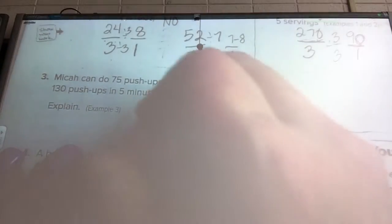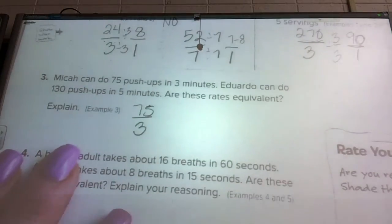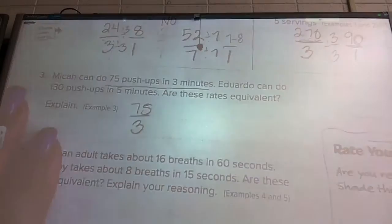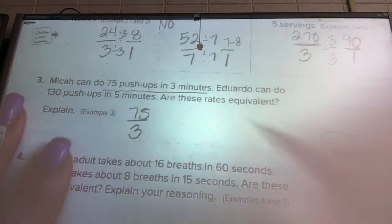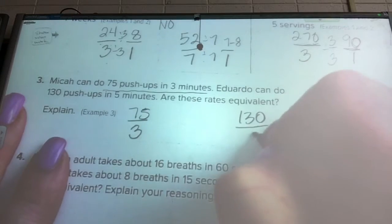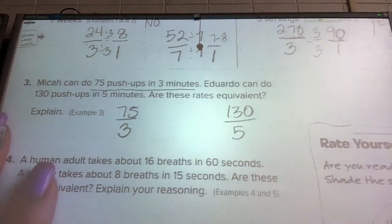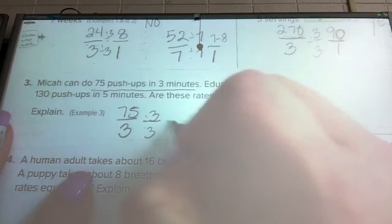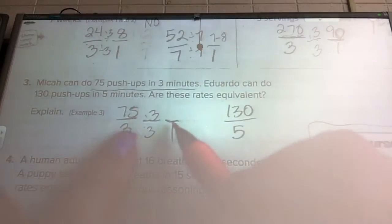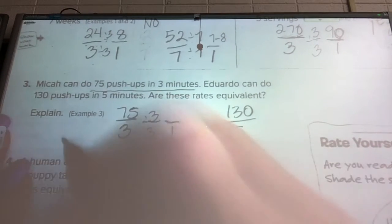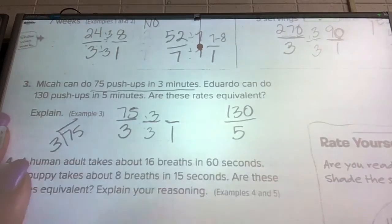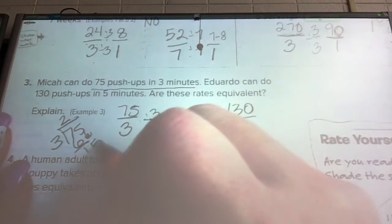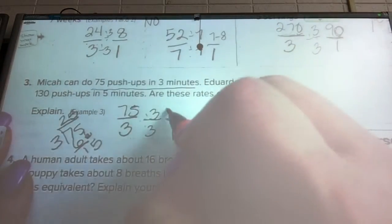Micah can do 75 push-ups in 3 minutes. Notice how I write this as I read it. It makes it a lot easier than going back and trying to find all the information. Eduardo can do 130 push-ups in 5 minutes. That's a lot of push-ups. Are they equivalent? Let's divide by 3 and get a unit rate. 3 times what would be 75? If you're not sure, come over to the side and do it the long way. 25 times.